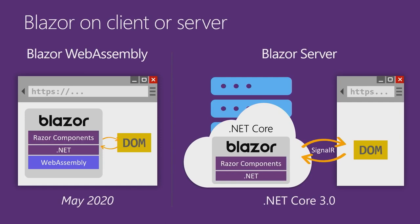In .NET Core 3.0, we've shipped support for Blazor server apps — you can use that in production today, go download and install it. And we announced today in the keynote that Blazor WebAssembly apps will be shipping and supported in May of next year.